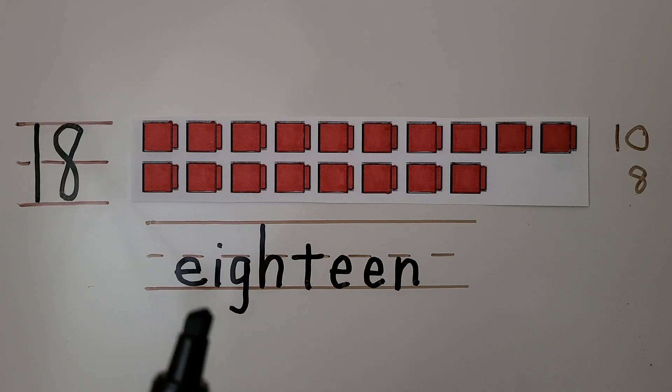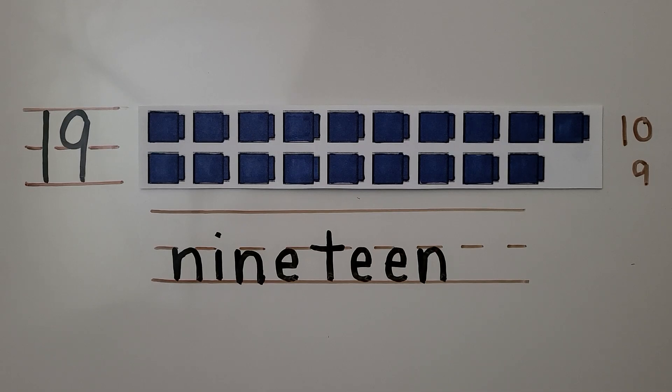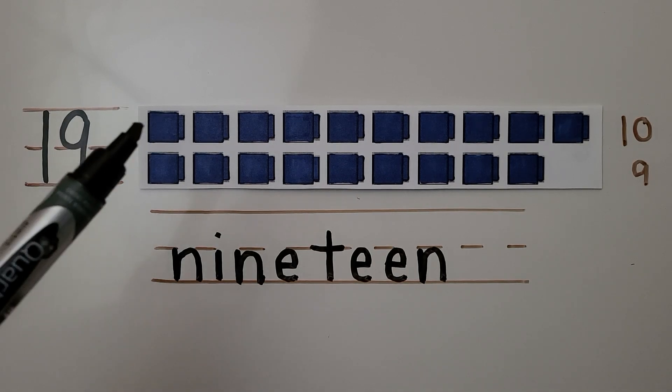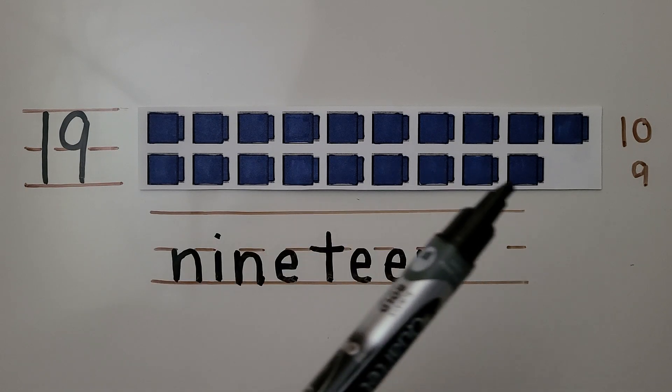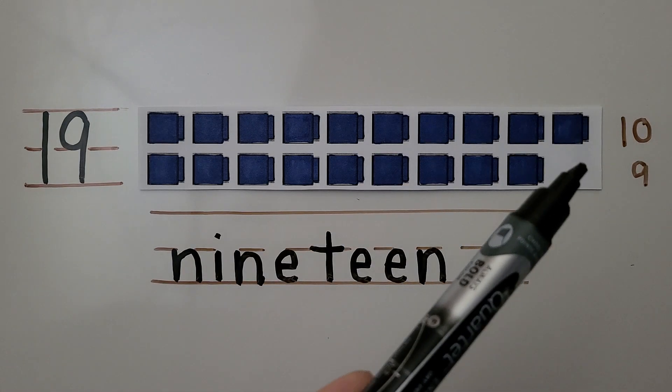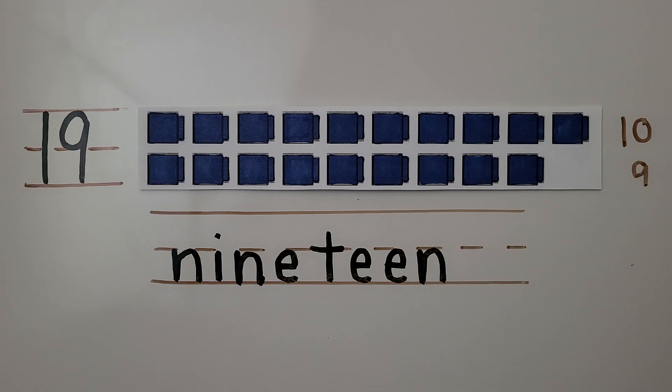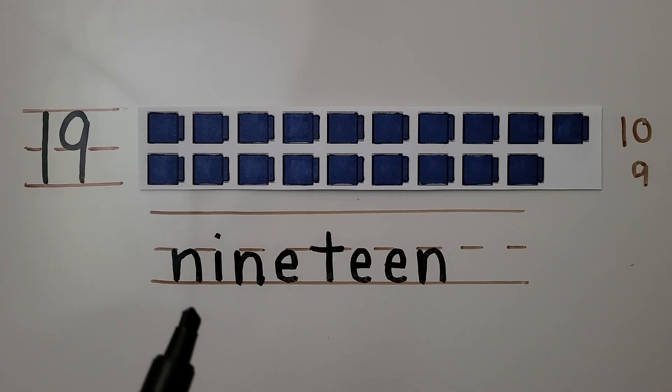Here we have some blue cubes. There are 10 cubes in the top row. There are 9 cubes in the bottom row. We know there's 9 because if this row has 10, this row has one missing, it must be 9. We have a 10 and a 9, that's 19 blue cubes. Here's the number 19, it's a 1 with a 9 right next to it. And here's the word 19: N-I-N-E-T-E-E-N.